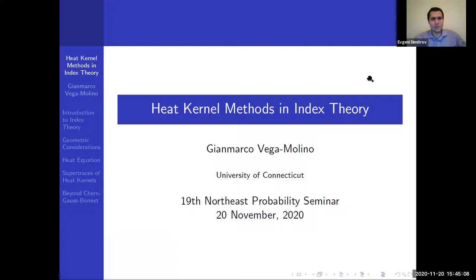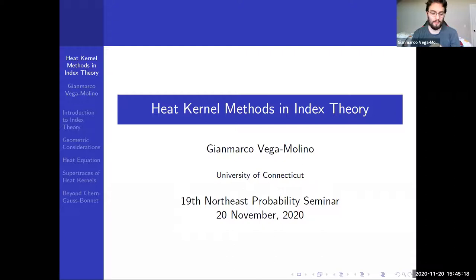Our second speaker of the session is Gianmarco Vega-Molina from the University of Connecticut. Thank you very much. I appreciate the opportunity to give a talk. The Northeast Probability Seminar has been a nice thing for quite a few years now, and I appreciate the chance to talk even in this context. I'm going to be talking about heat kernel methods in index theory, which actually connects back to quite a few of the things that Erlend was just talking about involving sub-Riemannian geometry in the Heisenberg group. We'll get back to that towards the end. Because my work is a lot more geometric than perhaps some of the other talks at this conference, I am going to explain some of the geometry behind some of these ideas to start.